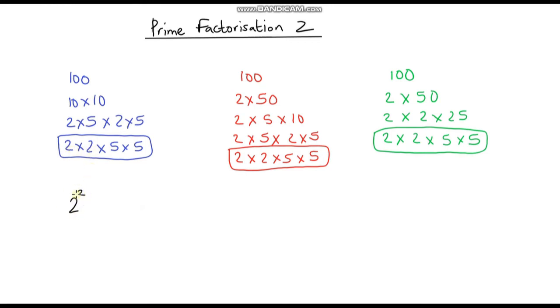So 2 times 2 is 2 squared, and then we're going to multiply by 5 times 5, which is 5 squared. This is known as index notation, and the reason why we call it index notation is because these are called indices.